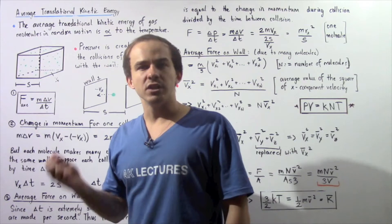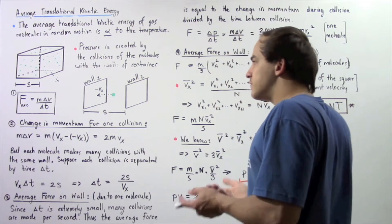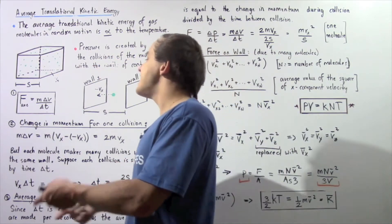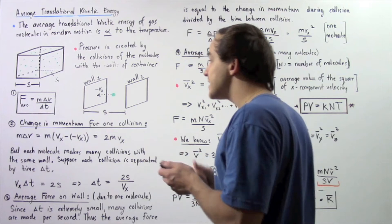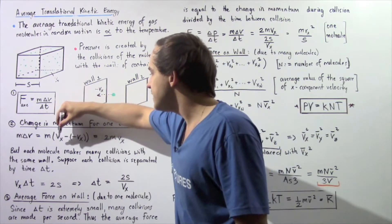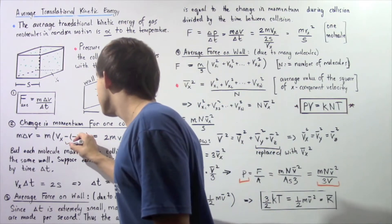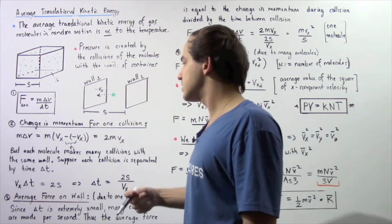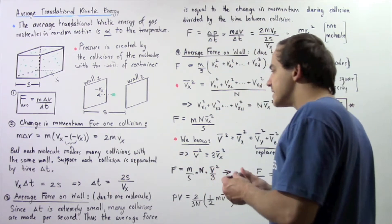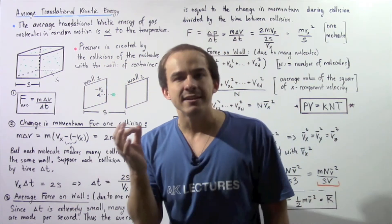Let's suppose that the velocity of our molecule when it's traveling in this direction is given by negative vx, and when it bounces off the wall, because the collision is completely elastic, the velocity is conserved, so it travels in this direction with velocity positive vx. So the change in velocity is: right before it collides the velocity is negative vx, and right after it collides the velocity is positive vx. So the final velocity minus the initial velocity is m times (vx minus negative vx), which gives 2vx. So m times Δv is equal to 2mvx — this is our change in momentum during a single collision.